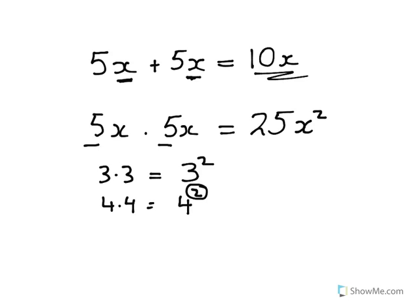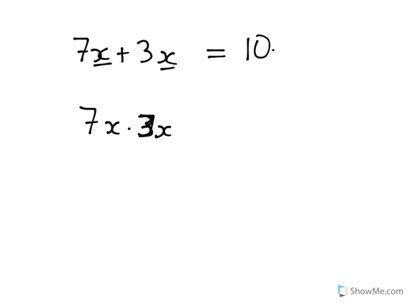So if we instead had 7x plus 3x and wanted to compare that with 7x times 3x. 7x plus 3x, well, 7 plus 3 is 10, and we've got x's in both terms, so we've got 10x as our answer. Whereas 7x multiplied by 3x, 7 times 3 is 21, and x multiplied by x is x squared.